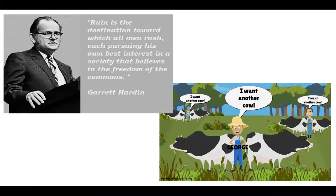A famous example of a negative externality was used by evolutionary ecologist Garrett Hardin in his famous treatise, 'The Tragedy of the Commons.' In this simple example, cows are purchased and sent to graze on the commons that everyone shares equally, and they remain there until it's time to bring them in and milk them.